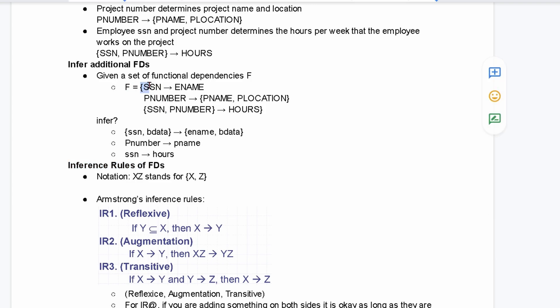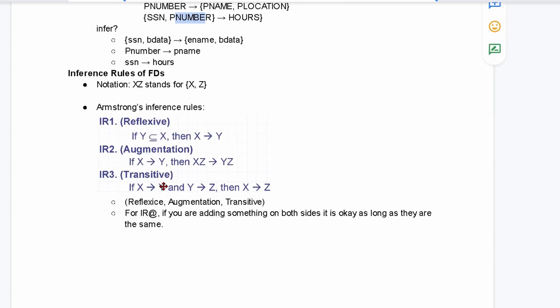We can see from here that our F is equal to: first we have our social security number goes to employee name. Then we have P number, and this is going to P name and P location. We also have a social security number, P number, and it goes to our hours. So, how can we infer this? Well, we're going to want to use our rules down here.